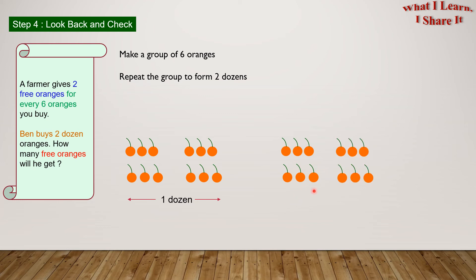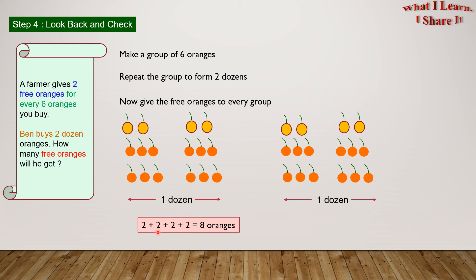Here is another group, and here is another group, and these 2 groups make 1 dozen. And these 2 groups of 12 oranges make 2 dozens. Now give the free oranges to every group. Here are 2 free oranges for this group, and here are 2 free oranges for this group. Here are 2 free oranges for this group, and here are 2 free oranges for this group. 2 plus 2 plus 2 plus 2 equals 8 oranges.